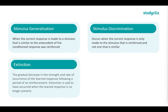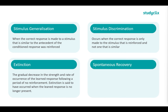Extinction is the gradual decrease in the strength and rate of occurrence of a learned response following a period of no reinforcement; extinction has occurred when the learned response is no longer present. For example, if the bird keeps pecking at the disc when the light is green but gets no food, eventually it will stop. However, we do have spontaneous recovery, where the correct response is performed again despite a period of no reinforcement — the bird hasn't gotten food for a long time but tries anyway.